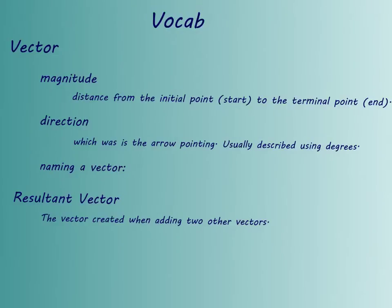We also have to look at how we're going to name a vector. Let's say that we have this vector here. I'm going to put my initial point. This point here where the arrow ends is my terminal point, and I'll label each of those. I'll just call them KW, for example. So then this vector would be named KW. I start at my initial point, I end at my terminal point, and then I put this little symbol above it that kind of looks like an arrow. Our last word is resultant vector, which is the vector created when adding two other vectors.